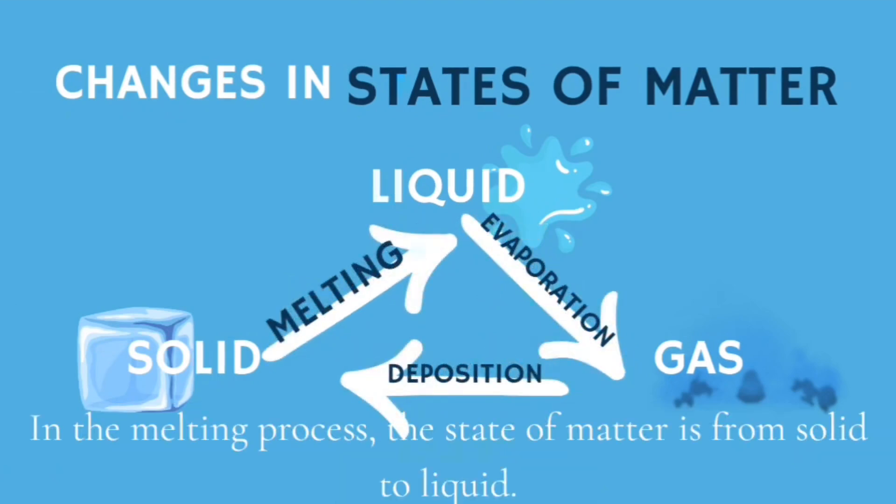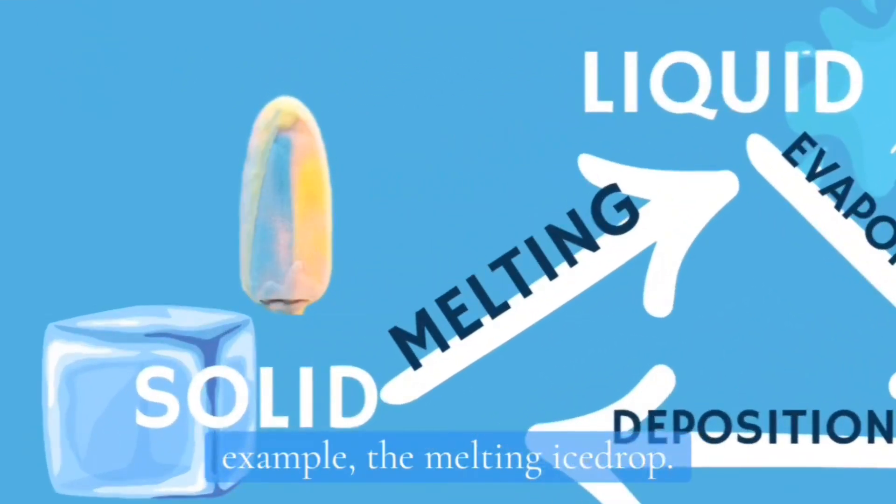In the melting process, the state of matter is from solid to liquid. Example: the melting ice drop.